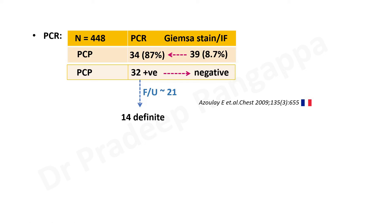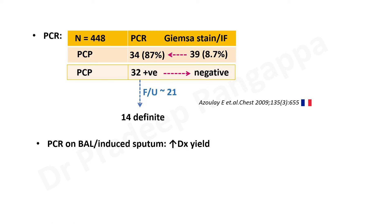We are all using PCR, so it's fairly easy to get a sputum, run a PCR, and rule out PCP. PCR on BAL or induced sputum increases the diagnostic yield, and this should be kept in mind rather than just relying on staining alone.